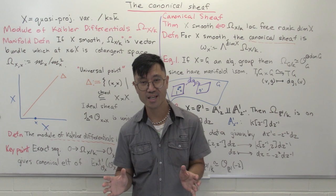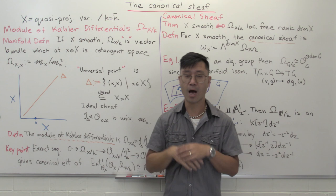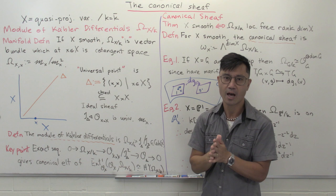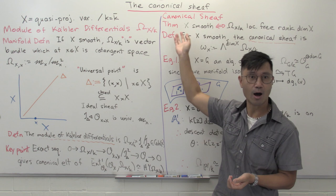Hi, I'm Daniel Chan from UNSW Sydney. Welcome to another adventure in pure mathematics. Today I want to talk about a very important gadget in algebraic geometry called the canonical sheaf. This is a gadget which is a little bit hard to fully motivate and appreciate, and in fact my supervisor Michael Artin once told me that this is something you just have to believe in and take on faith, and certainly it is quite surprising how useful it is in algebraic geometry.